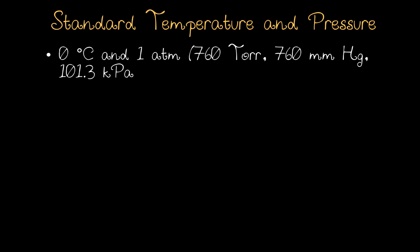Standard temperature and pressure is defined as 0 degrees Celsius and 1 atmosphere. 1 atmosphere is also equivalent to 760 Torr, 760 millimeters of mercury, and 101.3 kilopascals. Standard temperature and pressure is abbreviated as STP.